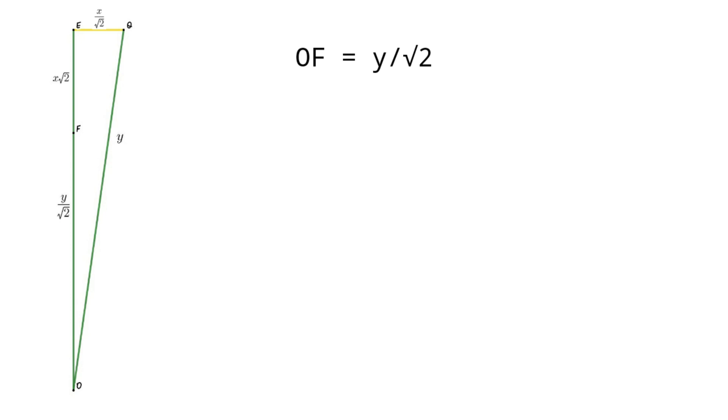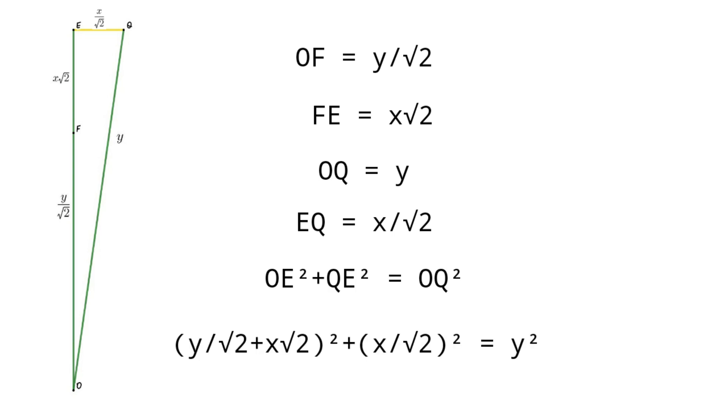OQ equals Y because radius of bigger circle. EQ equals X by root 2. We know that OE squared plus QE squared equals OQ squared. Y by root 2 plus X root 2 whole square plus X by root 2 square equals Y squared.